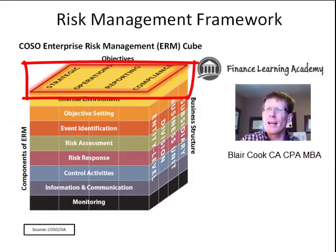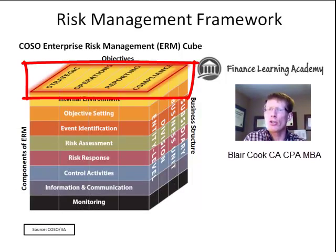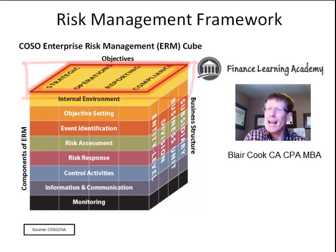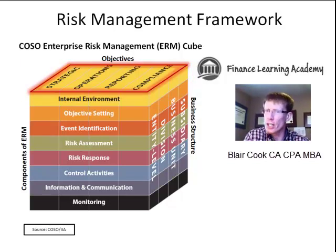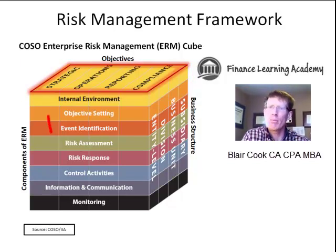Let's start with a look at the objectives that are across the top face of the COSO Cube. We have four categories of objectives: strategic, operations, reporting, and compliance.